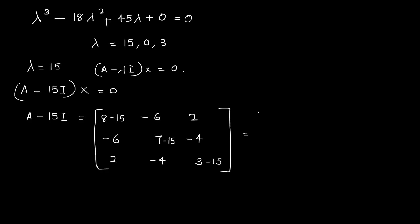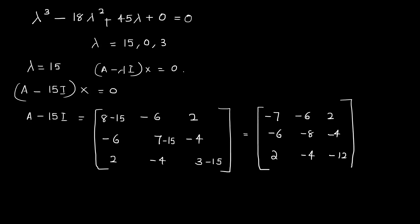For lambda equal to 15, the matrix (A minus 15I) gives entries: minus 7, minus 6, 2, minus 6, minus 8, minus 4, 2, minus 4, minus 2. We now solve for the eigenvector using two equations from two unknowns.